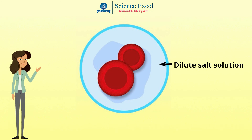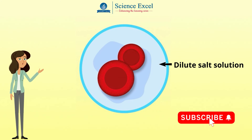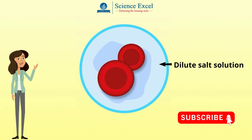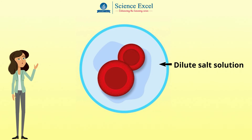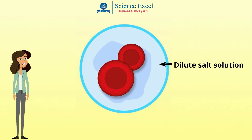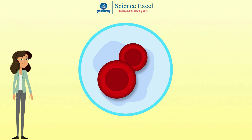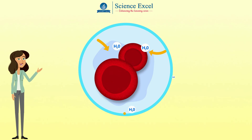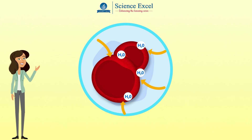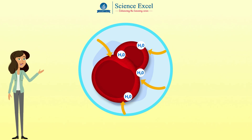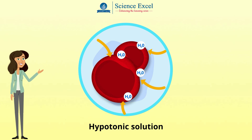In the third plate, the cells are surrounded by a dilute salt solution. The salt dissolved in this solution is less and the water content is higher compared to the water content inside the cells. Therefore, water molecules move inside the cells from outside, causing the cells to swell. Such a solution is called a hypotonic solution. These are the three types of osmotic conditions that help cells sustain pressure and survive.